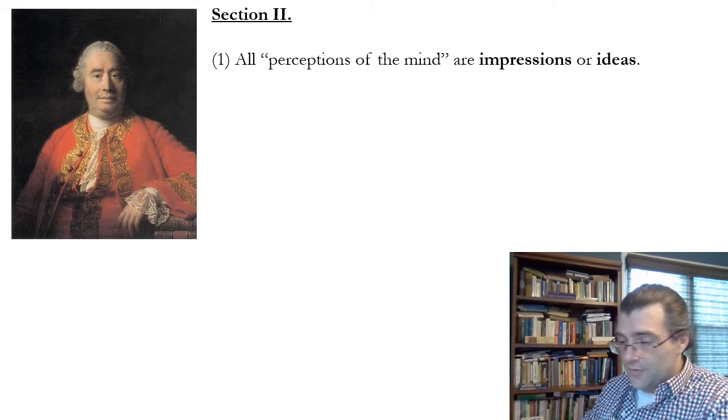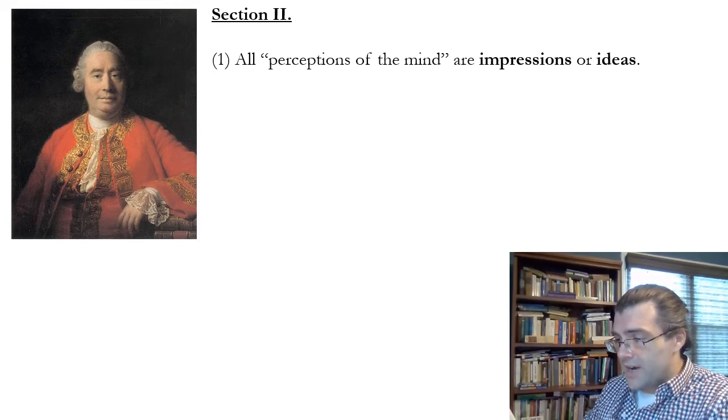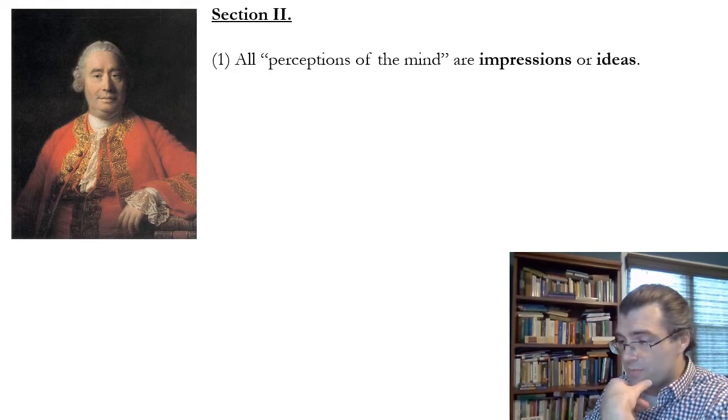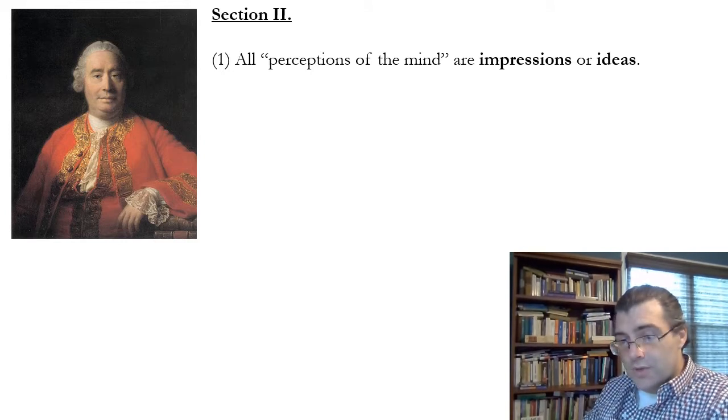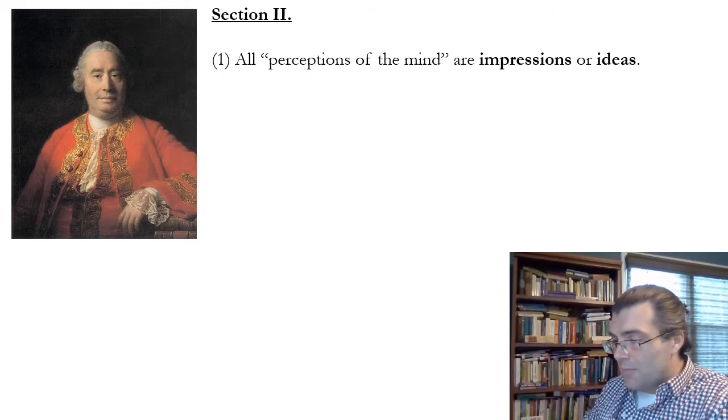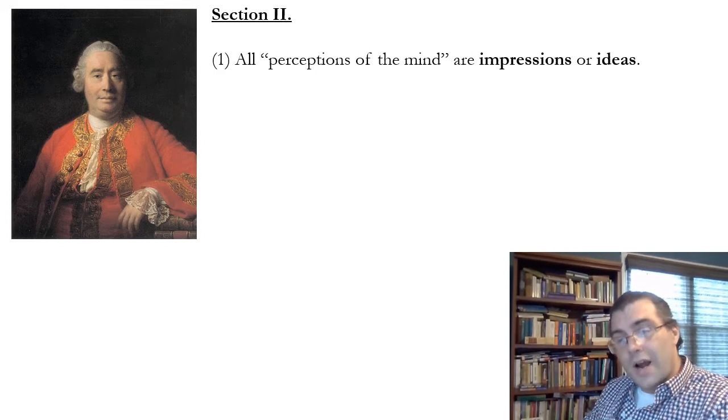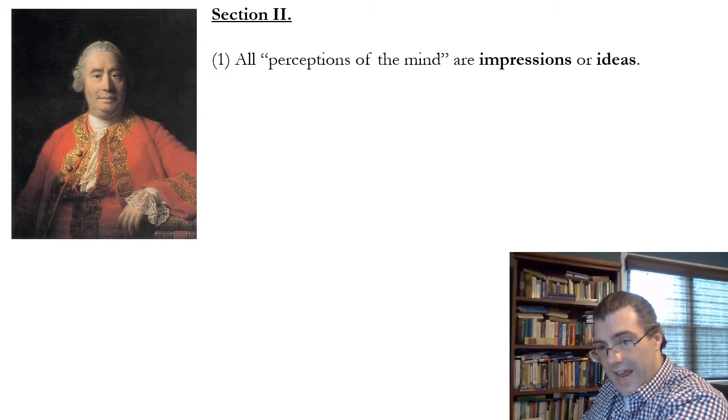Skipping a paragraph and going a little further, Hume writes, here therefore we may divide all the perceptions of the mind into two classes or species, which are distinguishable by their different degrees of force and vivacity. Less forcible and lively are commonly denominated thoughts or ideas. Thoughts or ideas. So he gives two names for those.